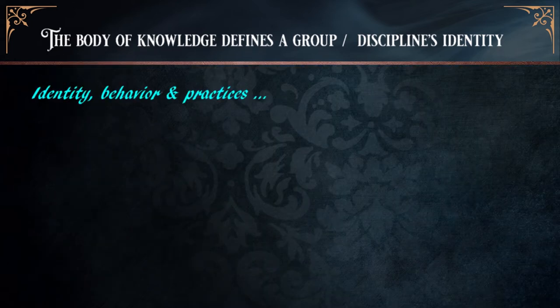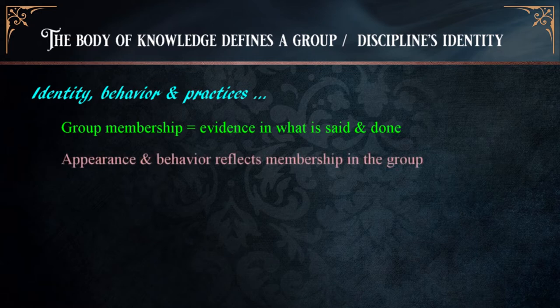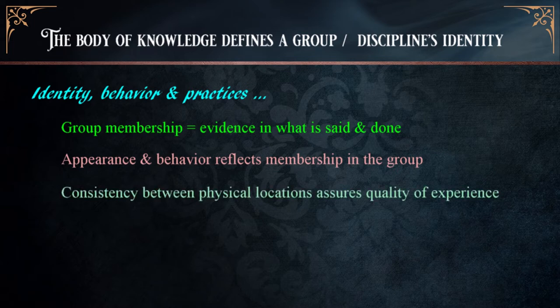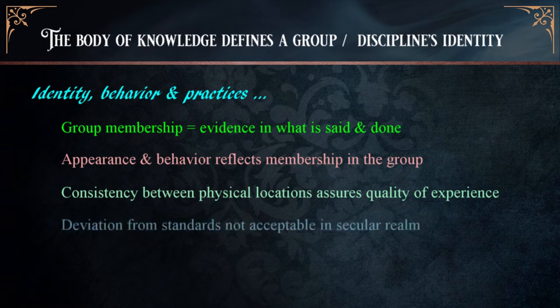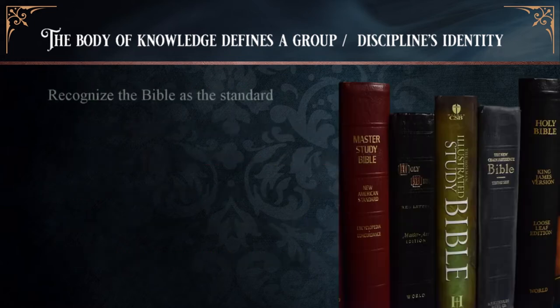After the lawsuit, the owner discontinued their practices. Changes to the menu lacked quality, they lost money, and eventually closed. The lesson is simple: when someone claims to be part of a larger group, we expect to see evidence of that in what they say and do. Consistency between physical locations assures us we can depend on the quality of experience. Deviation from accepted standards isn't tolerated — and usually the lack of quality accompanying alterations causes disappointment.